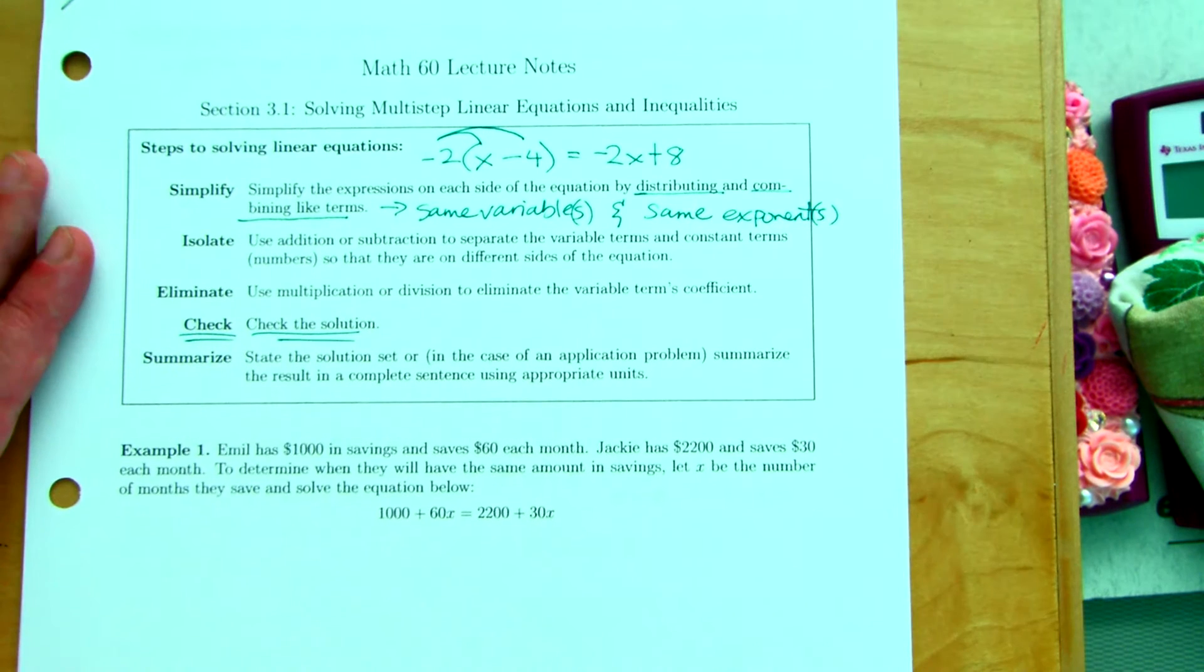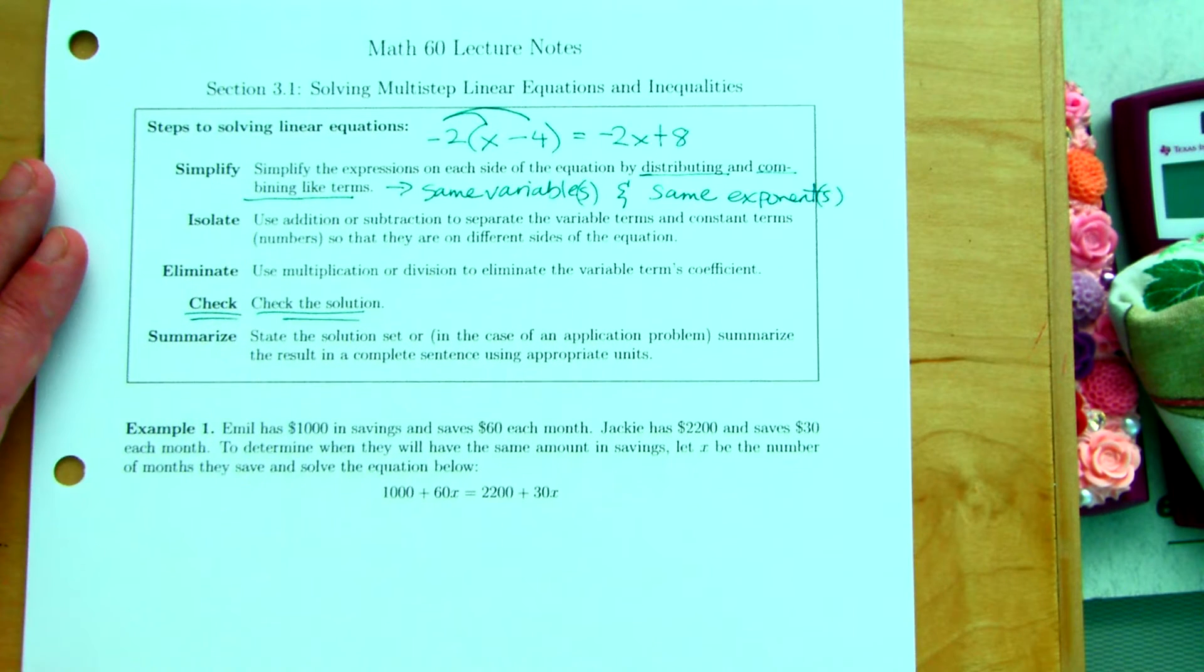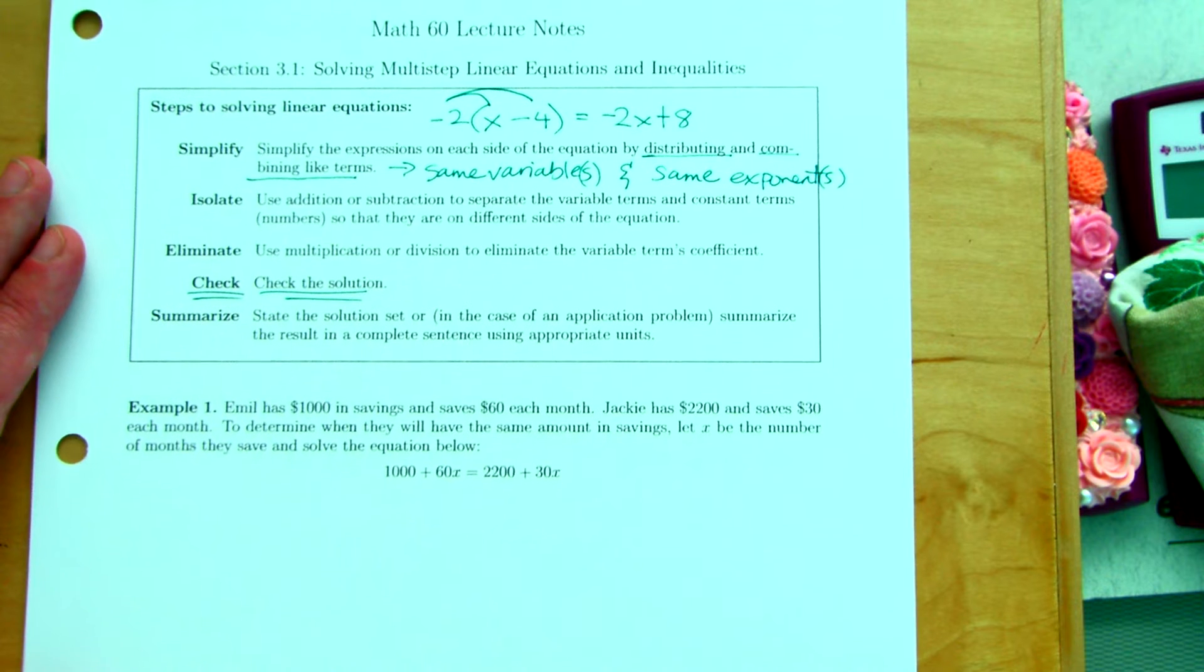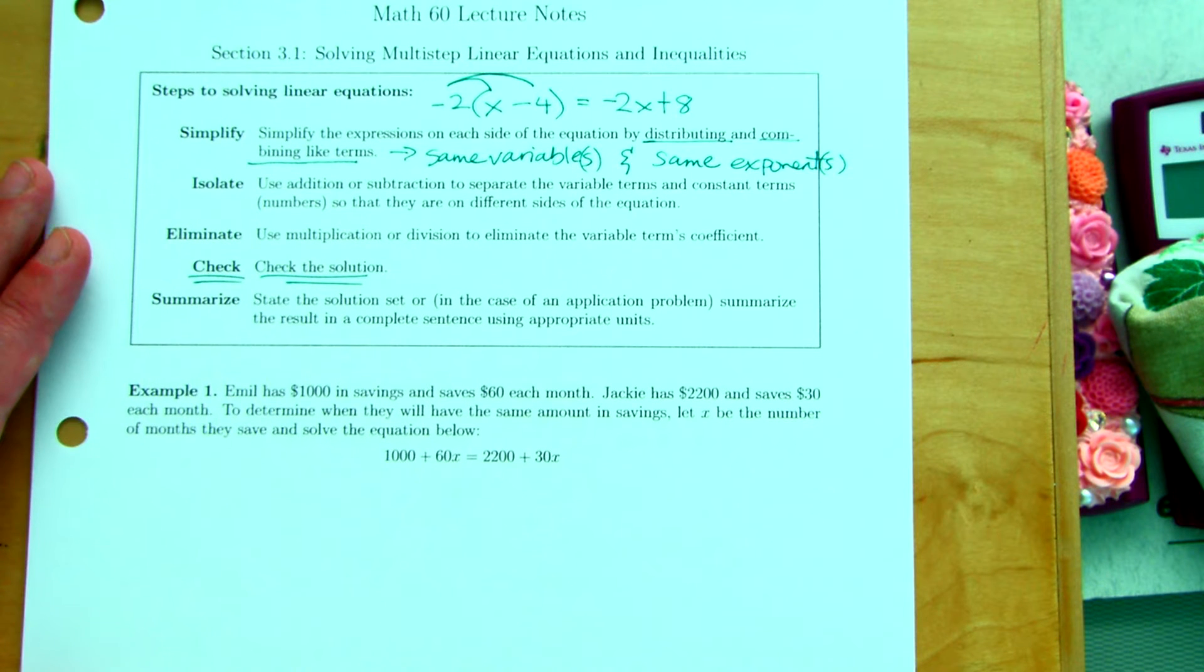Eliminate, basically use multiplication and division to eliminate the variable's coefficient. That's going to be any number in front of the variable. And then we always want to check. That just basically means plug in your number and see if it works. To summarize, at the end, you'll state the solution.